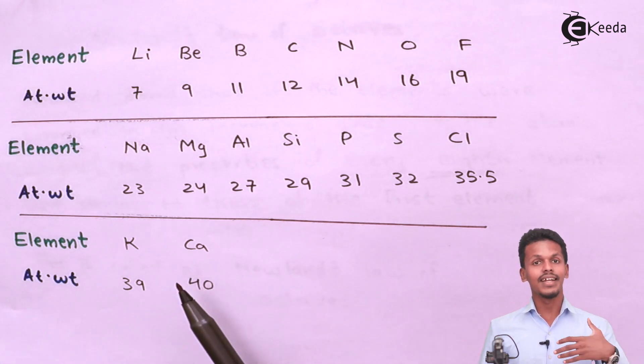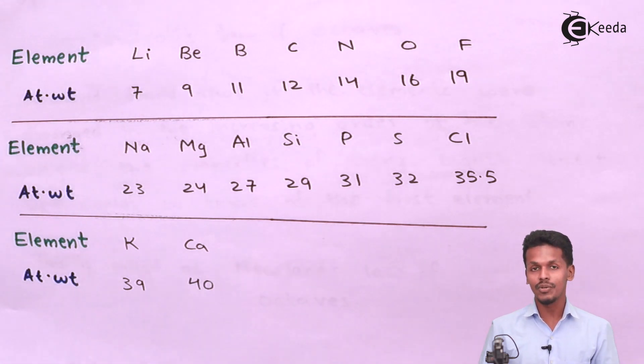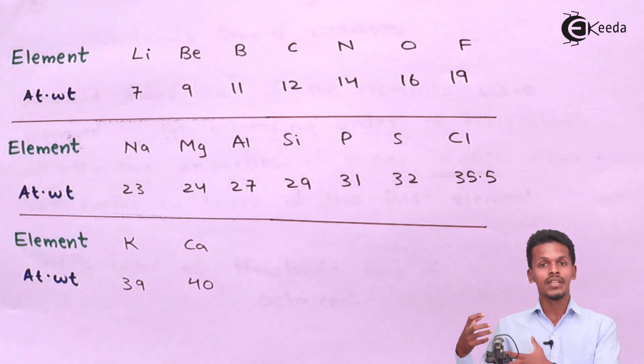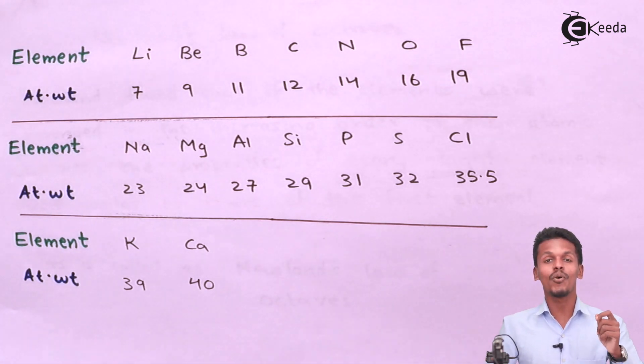It is only applicable up till calcium, but there are more than 180 elements. This was Newland's octave, which played a vital role in understanding the arrangement of elements in the periodic table and in the formation of the modern periodic table. This is the importance of Newland's octave.